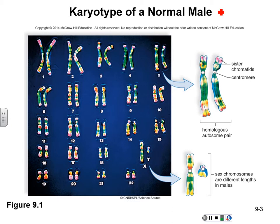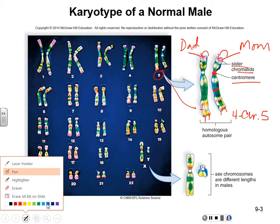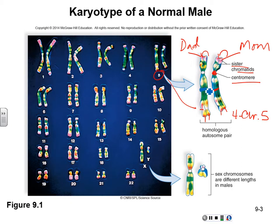First, they show you this karyotype, just so we can look at the chromosomes a little bit better and go over some of these words again. Remember, they're showing you chromosome number 5. All four of these are chromosome 5 — one came from dad and one came from mom, and they have both copied themselves. In the middle, we have a centromere. These are called sister chromatids.